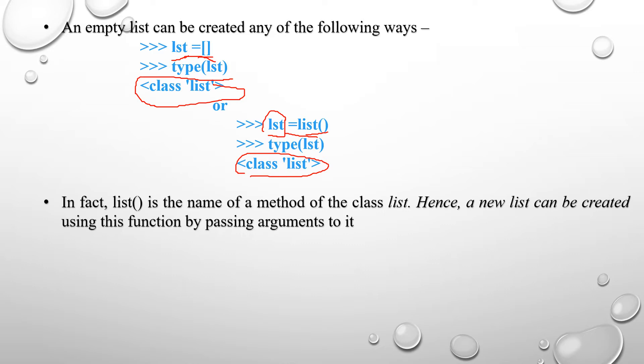A new list can be created using this function by passing arguments to it. For example, lst2 = list([3, 4, 1]). If you print lst2, the Python interpreter will print 3, 4, and 1.